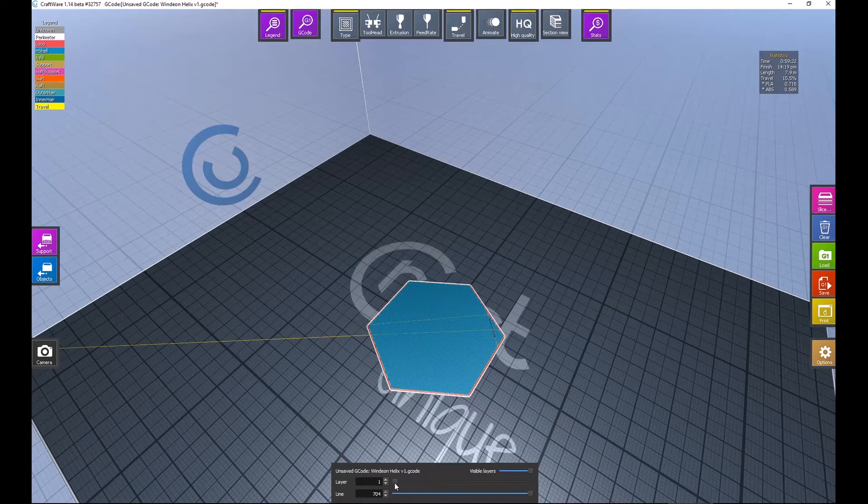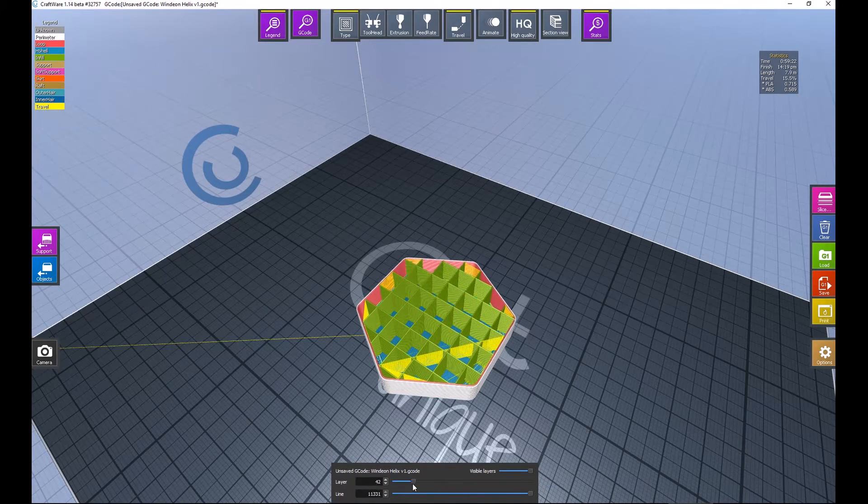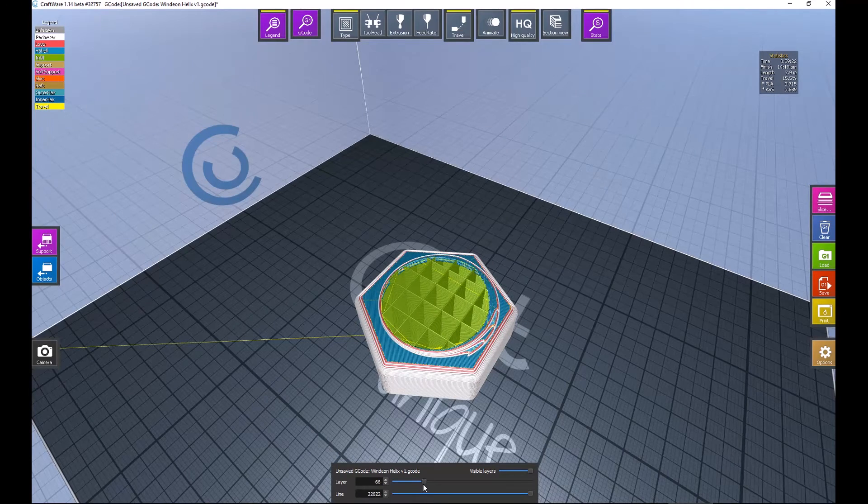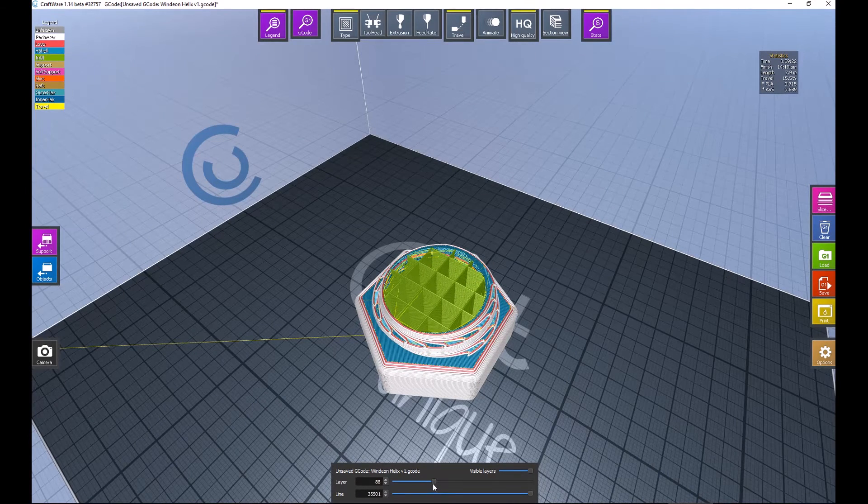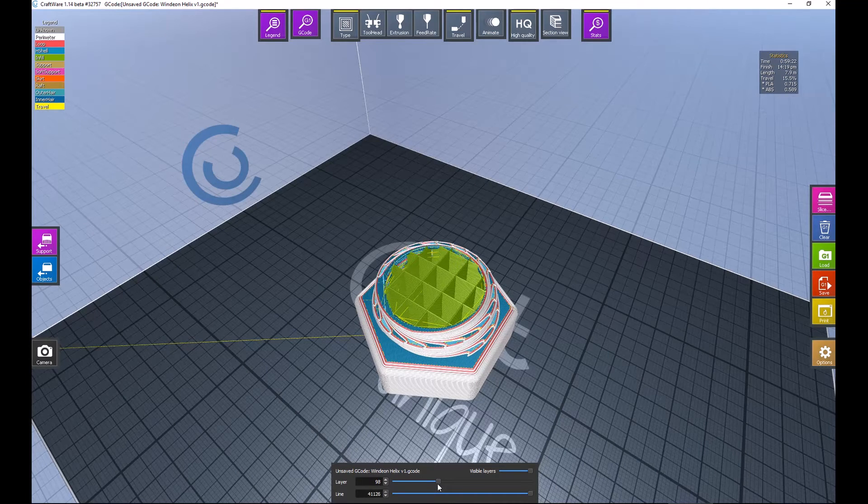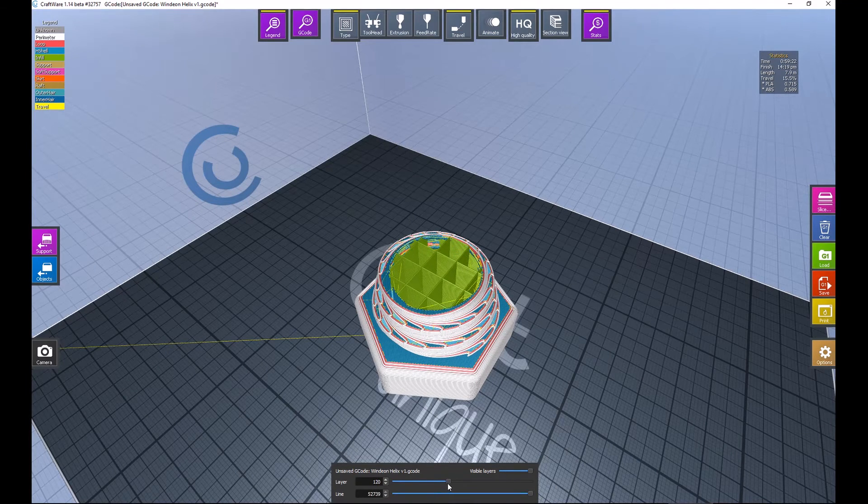The process the computer software goes through to prepare your machine code for the printer is called slicing. The software analyzes the model in thin slices from the bottom to the top and generates the code for the extruder head to build each layer, all the edges and all the infill.